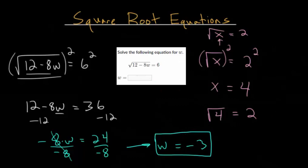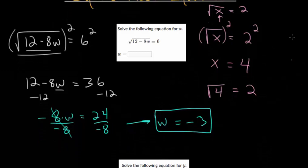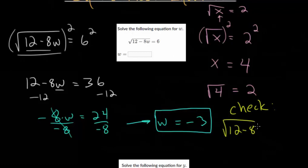So we're going to check this. When we check, we're just going to plug negative 3 back into the equation. We have the square root of 12 minus 8 times negative 3, and we're hoping this will equal 6. If it doesn't, then this equation doesn't have any solutions.